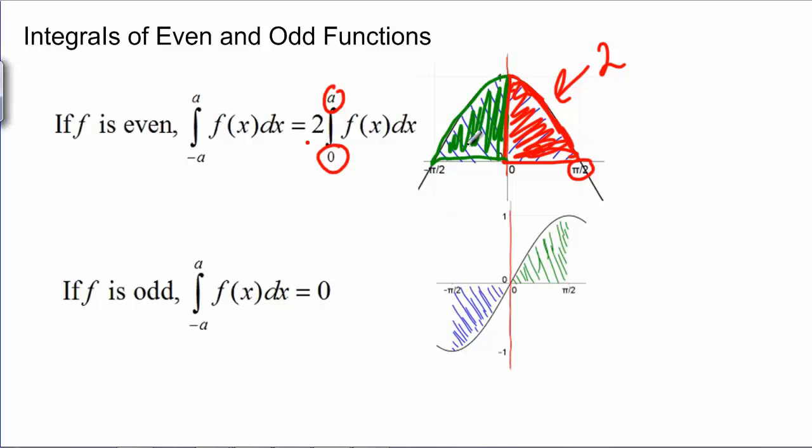With odd functions though, we get something even better. With odd functions, now we're looking at sine from negative pi over 2 to pi over 2. We have that the function is negative. We have that between negative a and zero, the function will be negative exactly when it's positive between zero and a and vice versa. If the function was positive over here between negative a and zero, it would be negative between zero and a.